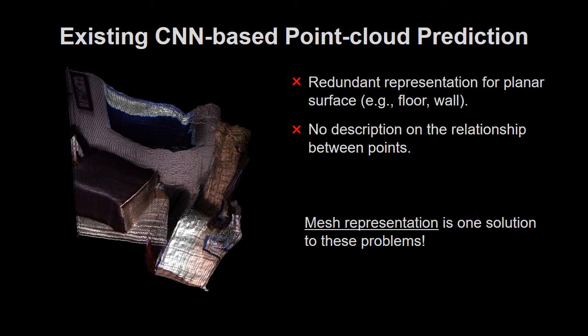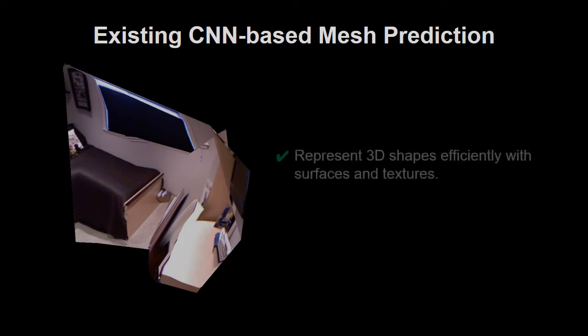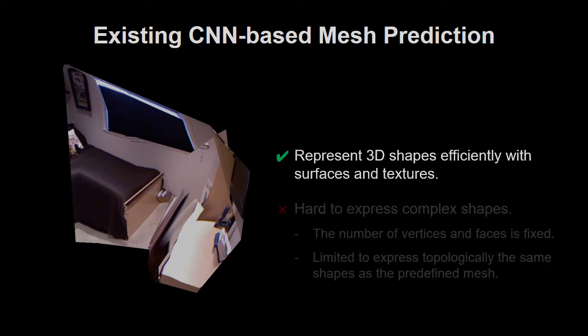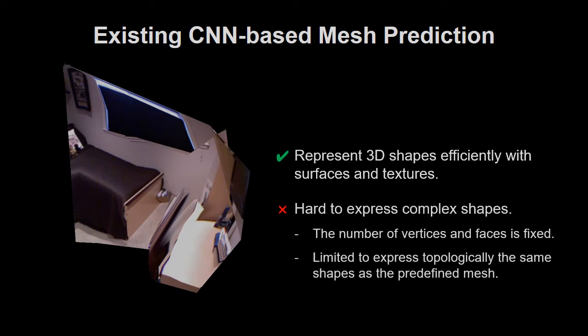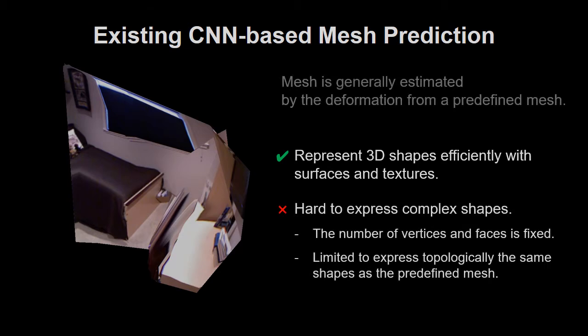One of the representations that can solve these problems is mesh. Mesh can represent 3D shapes efficiently with surface and textures. But it's hard to express complex shapes such as general scenes, because mesh estimation has been done by deformation from a predefined mesh.